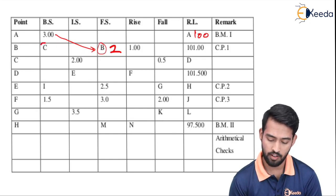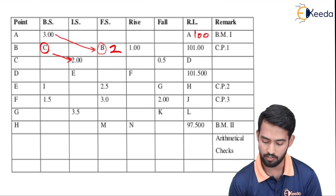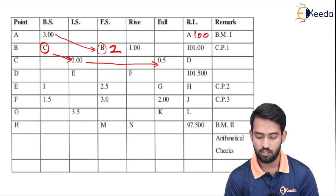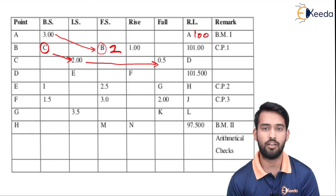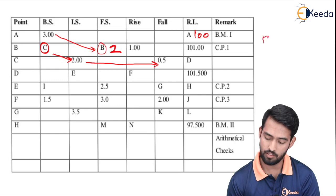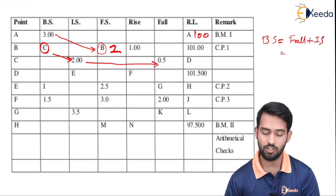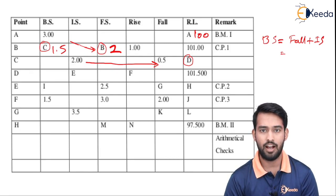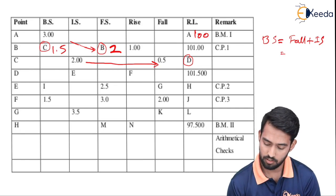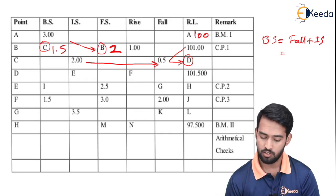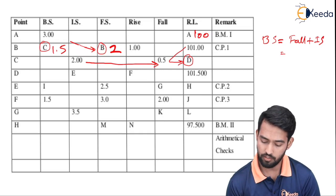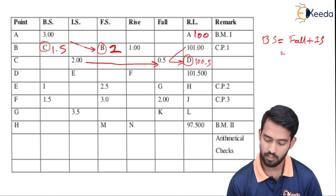Now next we have to find out Bs where we know IS and fall. The formula for fall is Bs minus IS equal to fall. We have already calculated fall and now we have to calculate Bs. So Bs will be equal to fall plus IS. Next we have to find out the RL of point B. RL is equal to RL of previous point plus or minus rise or fall. In this case we have fall, so RL of B minus fall gives us the answer equal to 100.5.